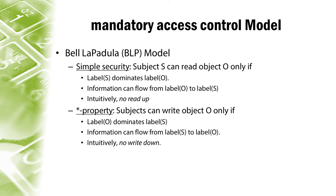According to the official ISC2 guide to the CISSP exam, and I quote, the Bell-LaPadula model, BLP, is a state mandatory access control model used for enforcing access control in government and military applications. The model is a formal state transition model of computer security policy that describes a set of access control rules which use security labels on objects and clearances for subjects. Security labels range from the most sensitive, e.g. top secret, down to the least sensitive, e.g. unclassified or public. The transfer of information from a high-sensitivity document to a lower-sensitivity document may happen in the Bell-LaPadula model via the concept of trusted subjects.